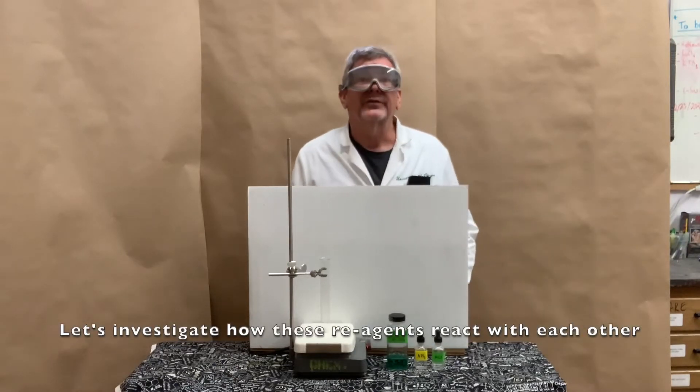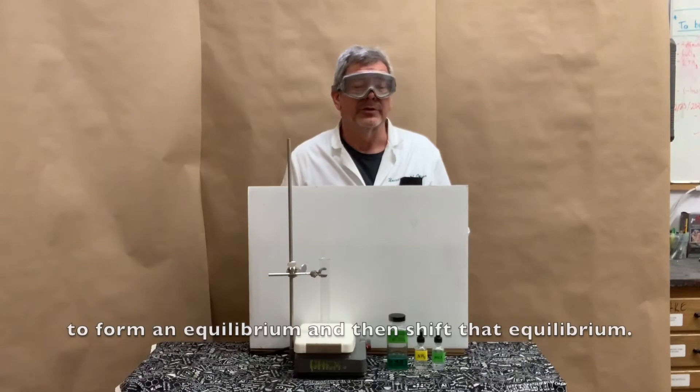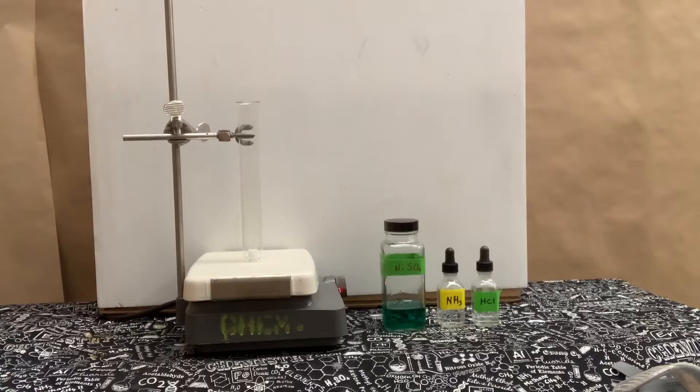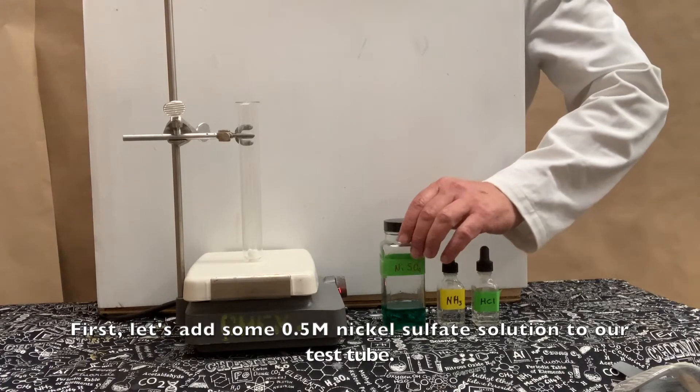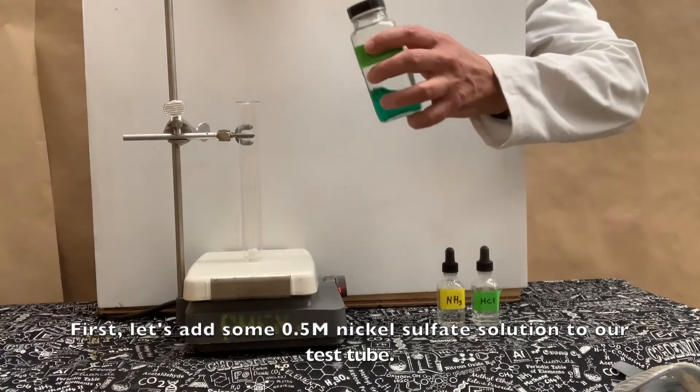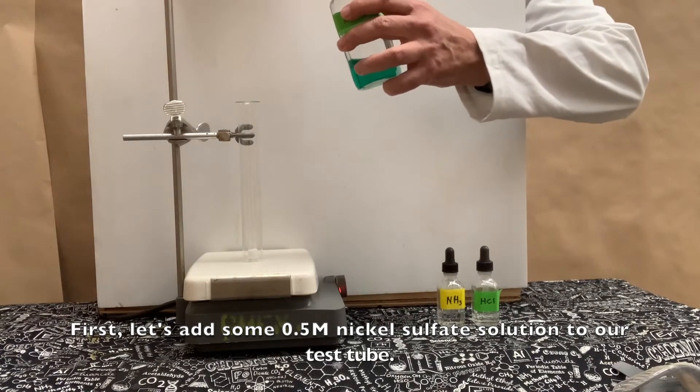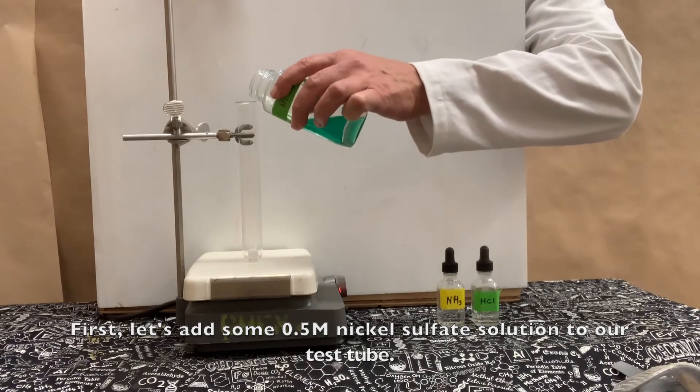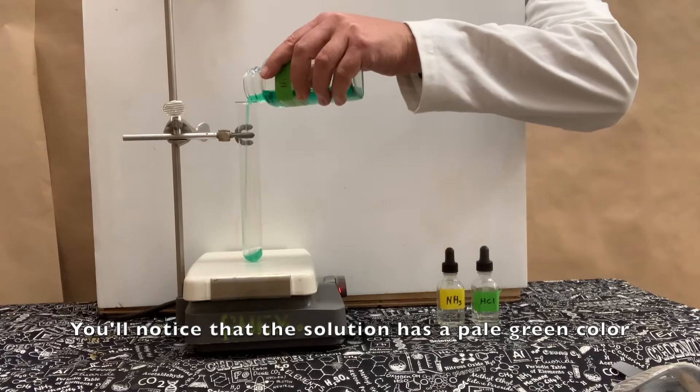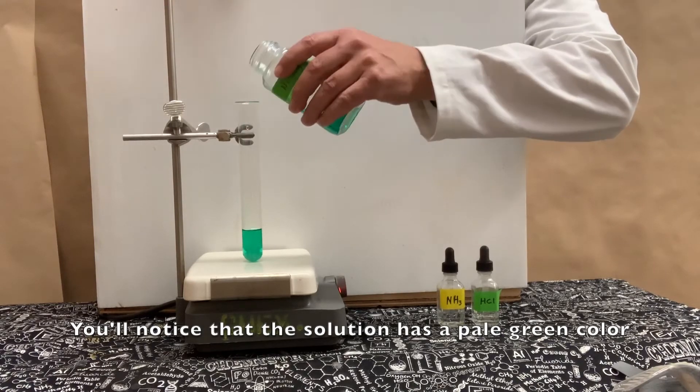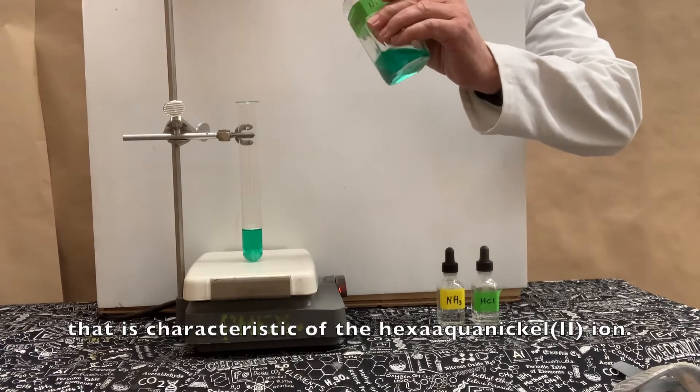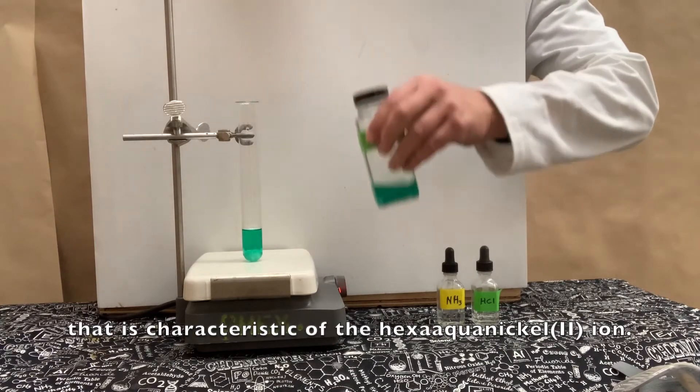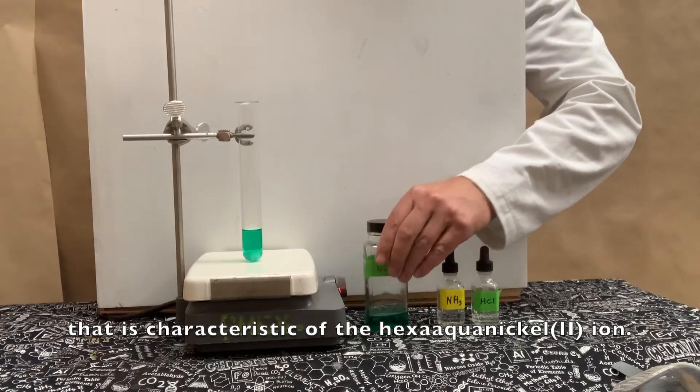Let's investigate how these reagents react with each other to form an equilibrium, and then shift that equilibrium. First, let's add some 0.5 molar nickel sulfate solution to our test tube. You'll notice this solution has a pale green color that is characteristic of the hexa-aqua nickel(II) ion.